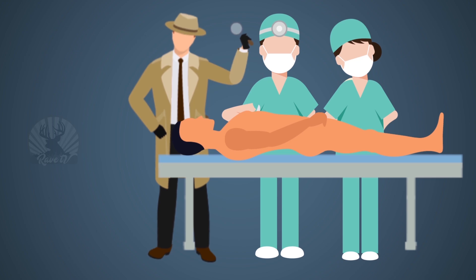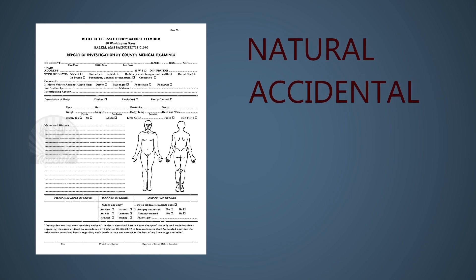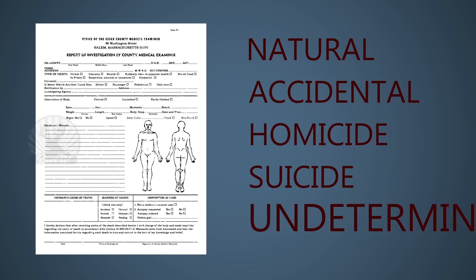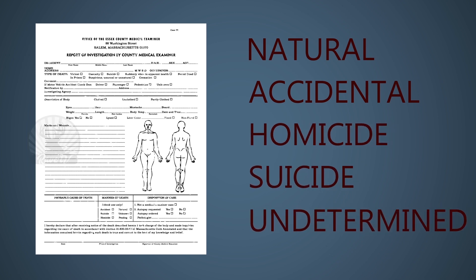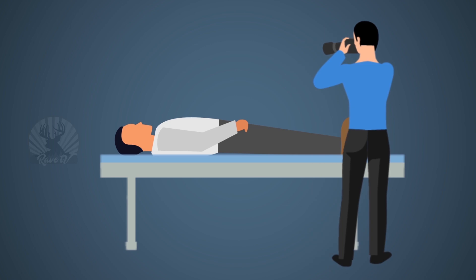Medical-legal autopsies, commonly referred to as forensic autopsies, are done to find the cause and manner of death, or sometimes to identify the dead body. Based on the forensic autopsy report, deaths are classified into natural, accidental, homicidal, suicidal, or undetermined. Autopsy procedures might vary based on the purpose for which it is conducted.